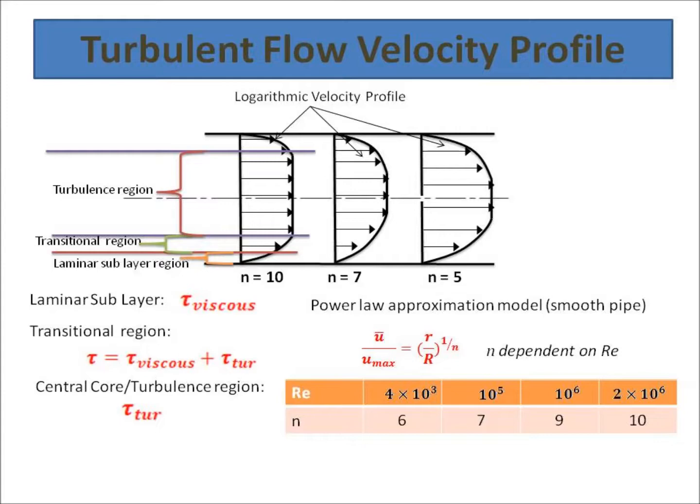You can see that with the variation in value of n, the velocity profile becomes flat. So you can see that when n is equal to 5, the velocity profile is flat as compared with when n is 10.